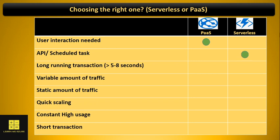If your application is handling long-running transactions that require five to eight seconds to complete, you should go for platform as a service, because serverless is meant to handle small tasks. If your application will handle a variable amount of traffic — sometimes a spike, sometimes at rest — then you should go for serverless. If you know your application is going to handle a static amount of traffic, then you can go for either platform as a service or serverless, depending on the need.